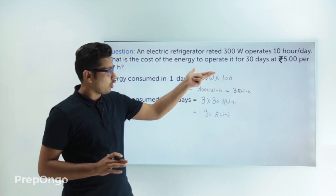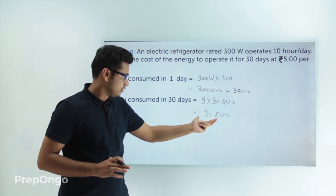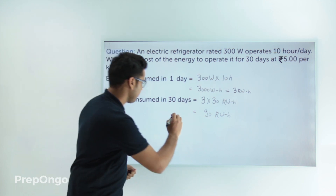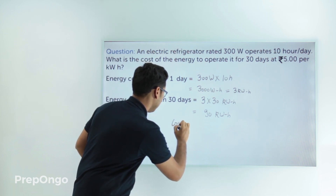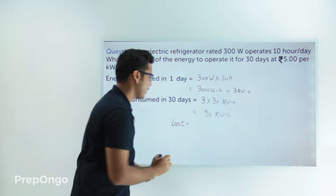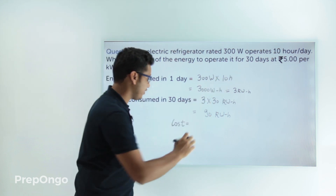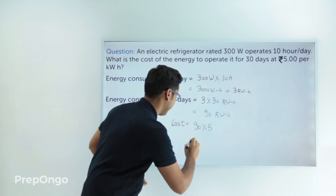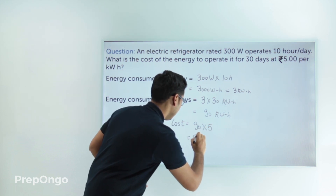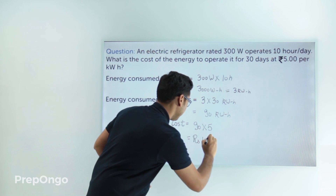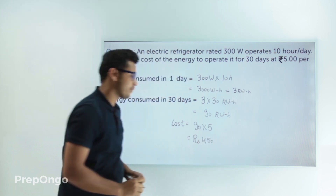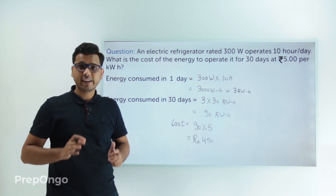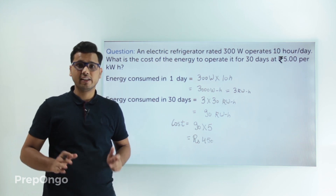Now we can calculate the cost of operating this refrigerator for 30 days by multiplying the energy by the cost per unit. The total cost equals 90 kilowatt-hours × 5 rupees = 450 rupees. This is how we calculate the cost of electricity consumed in our homes.